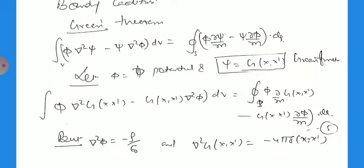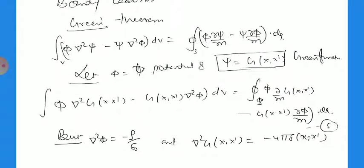Using Dirichlet or Neumann boundary conditions, we apply Green's theorem: the volume integral of (phi del squared psi minus psi del squared phi) dV equals the surface integral of (phi del psi by del n minus psi del phi by del n) dA. We substitute phi as the potential and psi equal to the Green function G(x, x'). The left-hand side becomes the volume integral of phi del squared G(x, x') minus G(x, x') del squared phi, equaling the surface integral of phi del G by del n minus G del phi by del n.